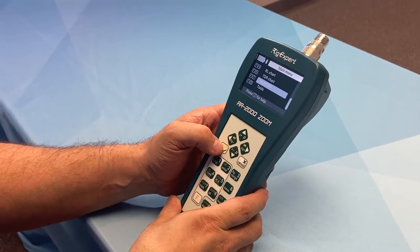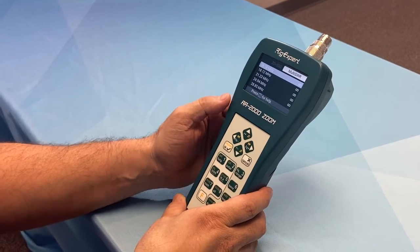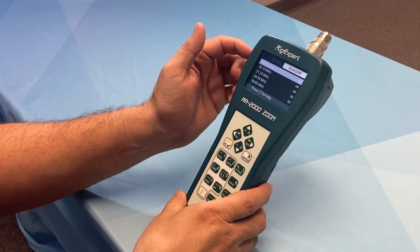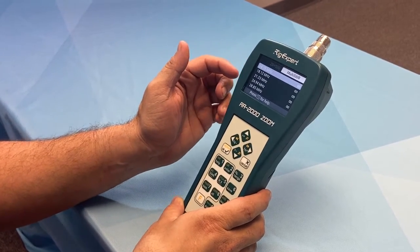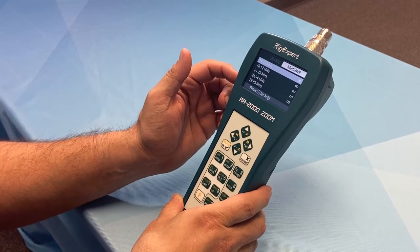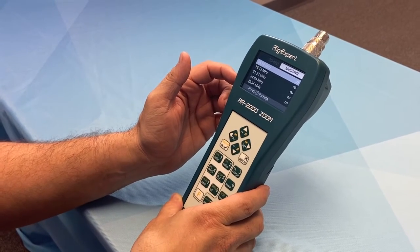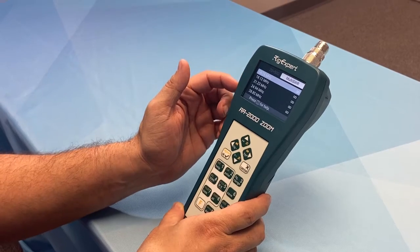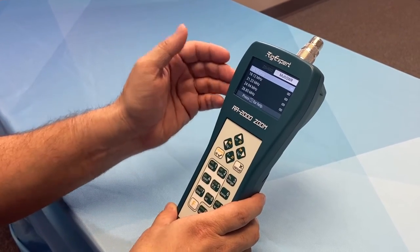What I like about the Rig Experts is there is a multi-SWR option where you can test multiple frequencies and bands all at the same time. So, if you have a multi-band antenna, you can check all of your bands up to 5 at one time.